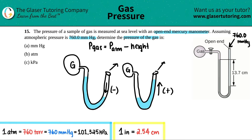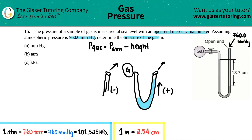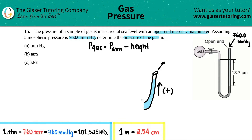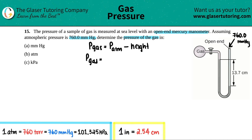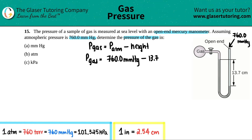If we were dealing with the other configuration it would be atmosphere plus the height. Now let's do the math. The pressure of the gas equals the atmospheric pressure — which is 760.0 millimeters of mercury — minus the height, which is 13.7.